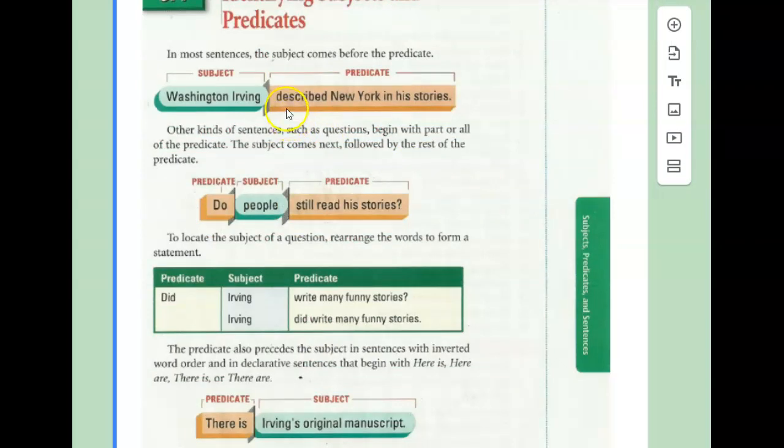Now, the predicate sometimes is split. Here we have an extra part of the word in front of the subject. Do people still read his stories? People is what the sentence is about, but the predicate is actually do still read. So quite often, you might have an extra word in front of the verb that would show up after the subject.